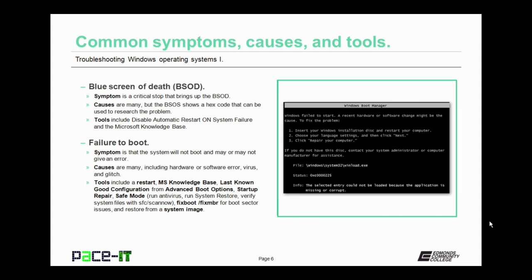You can use last known good configuration from the advanced boot options menu, or startup repair from the same menu, or safe mode from the same menu. In safe mode, you can run antivirus and system restore. You can verify system files with the system file checker scan now option. Fix boot and fix MBR can be used to fix boot sector issues, and as a last resort, you can restore from a system image.